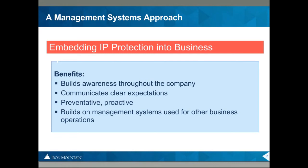The benefits are obvious: people in the company know what they should be doing, your communication with suppliers is clear and informative, issues get handled proactively. In most companies, you've already got some of these management systems in place for reviewing suppliers and dealing with compliance in areas like QA or environmental, which fit really well and can also be used for overseeing your intellectual property protection.